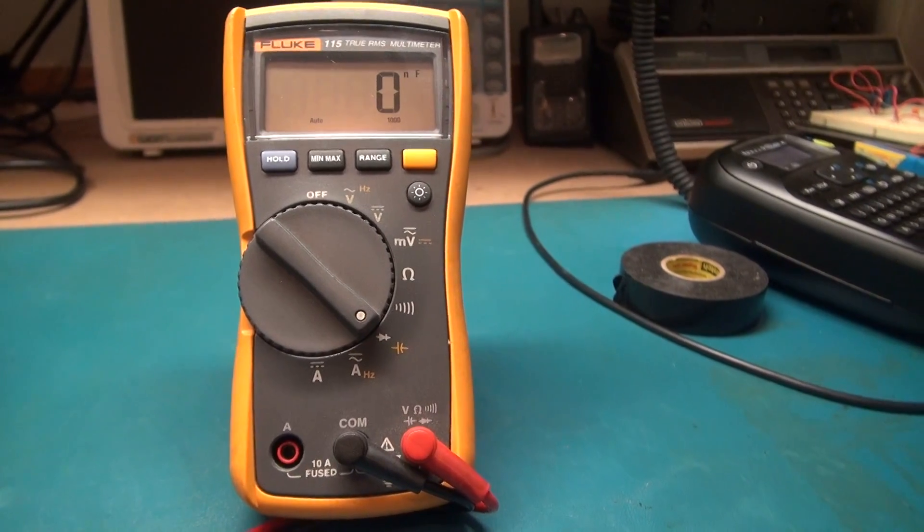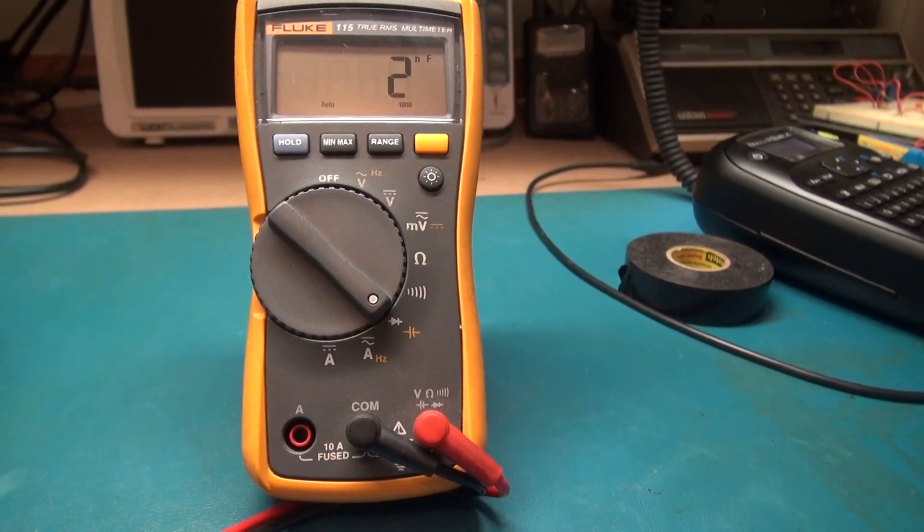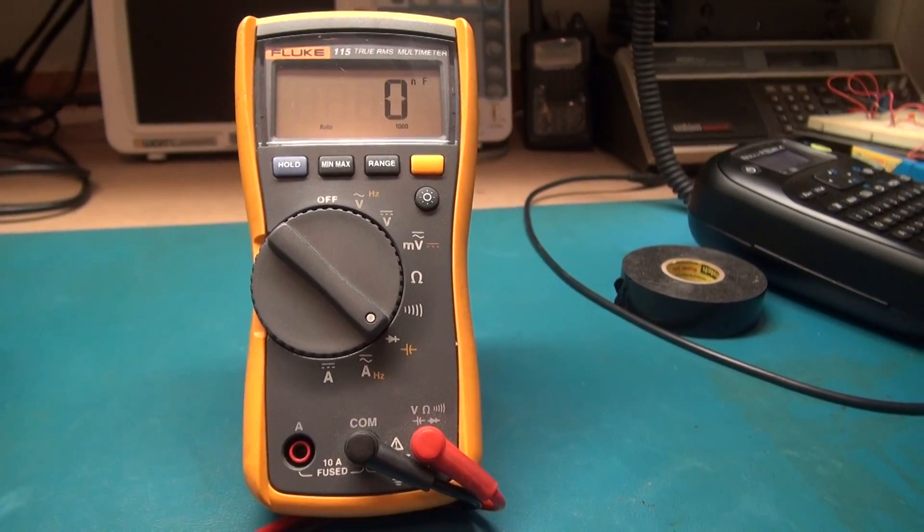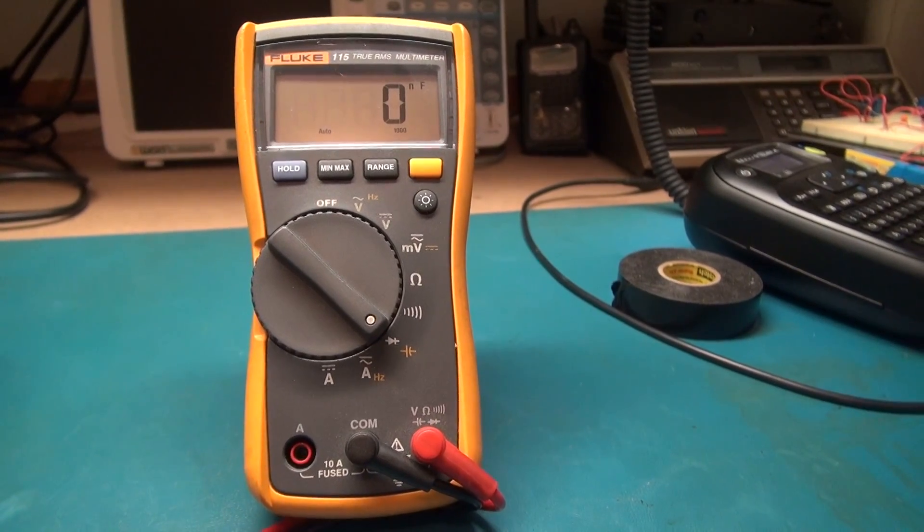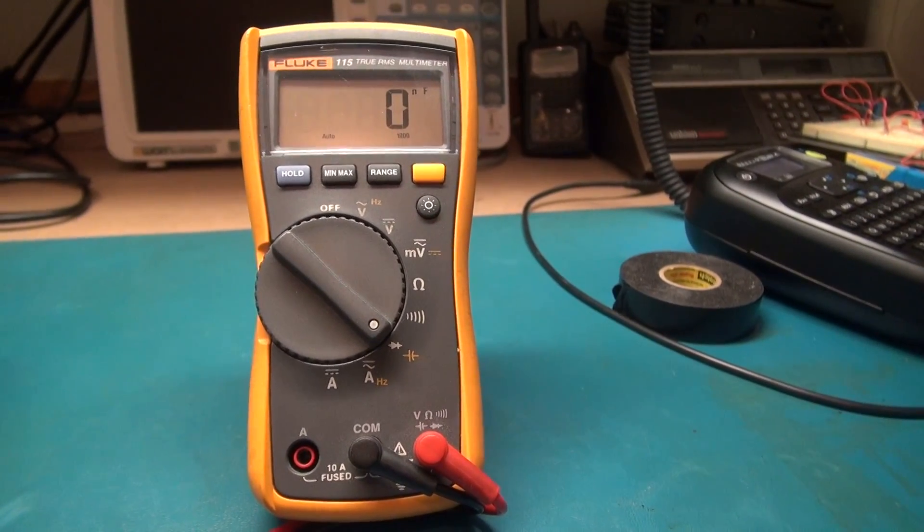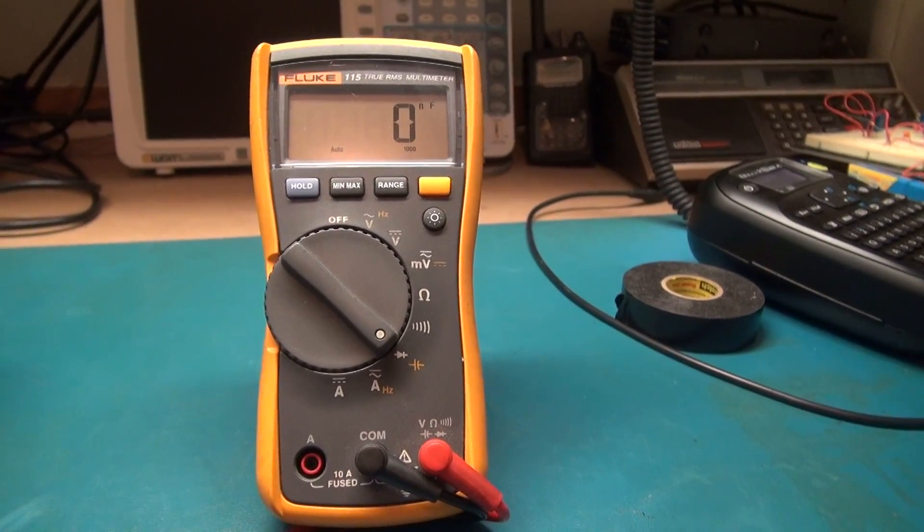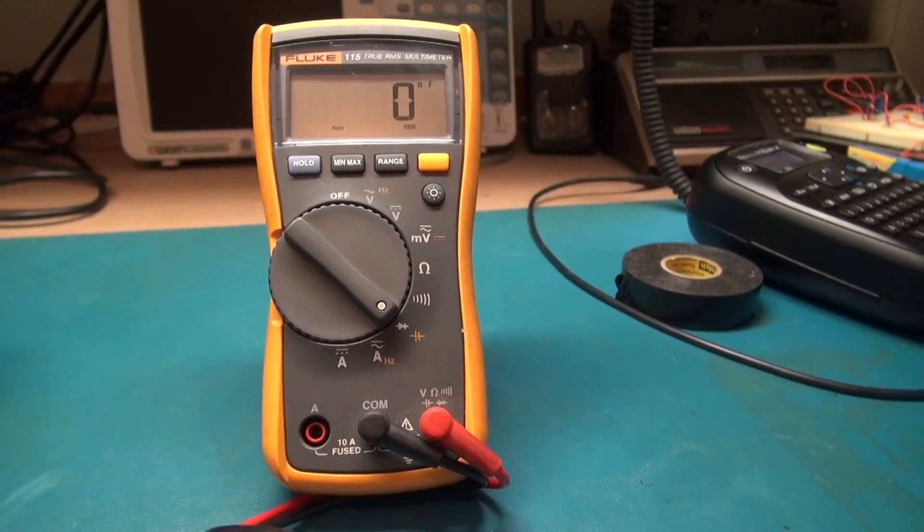It will tell you the max capacitance that the current capacitor you're testing has, and that is it. It will not tell you the equivalent series resistance of the capacitor or if it's ready to fail or getting close to fail. It will tell you basically if your capacitor capacitance is in range.